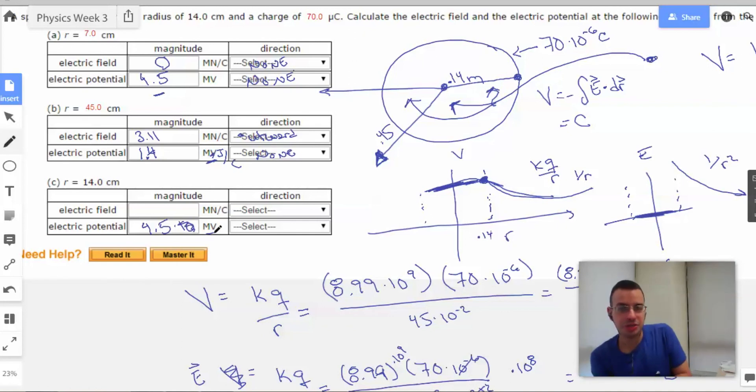Not times 10 to the 6 because we already have megavolt right there. And again, the direction will be none.